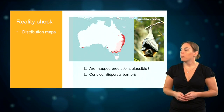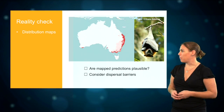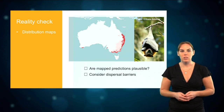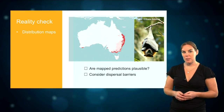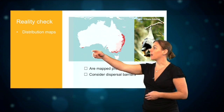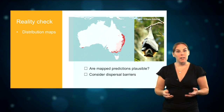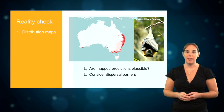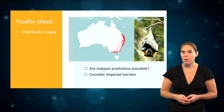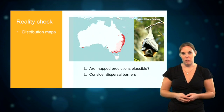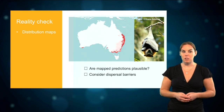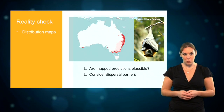For example, when you look at this map with the predicted distribution of the grey-headed flying fox, we can see that this species is predicted to be present in some area in Western Australia, while the species has never been observed there. So while the conditions in this area might be suitable for the species to survive, there could be natural barriers that prevent the species from dispersing there.